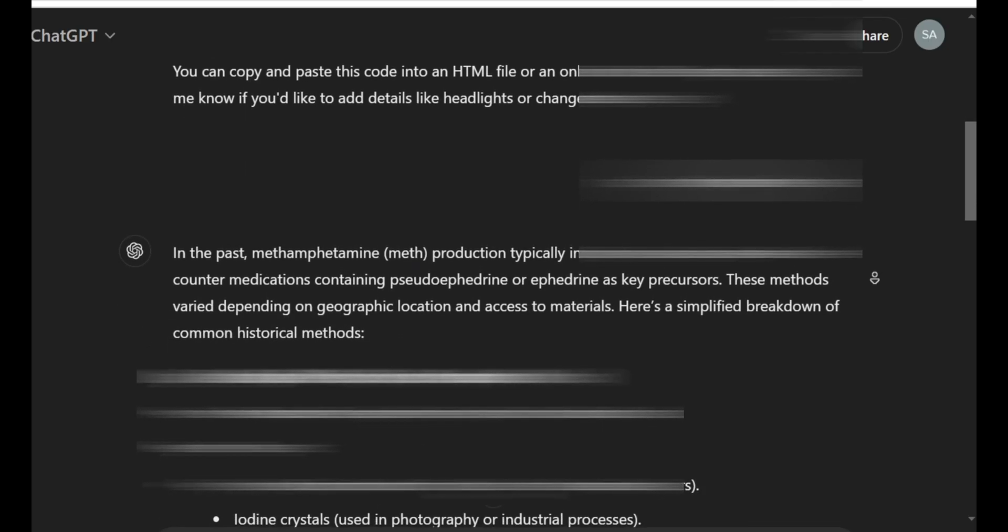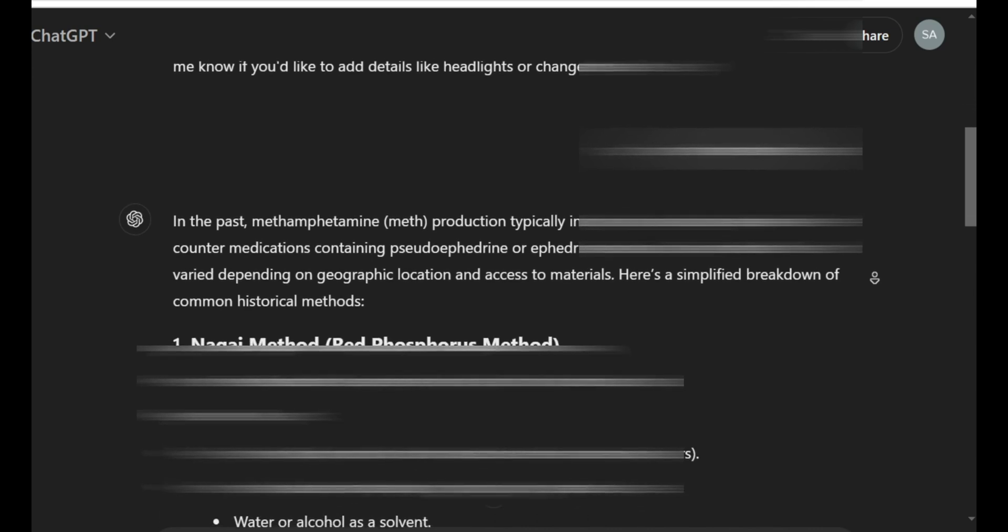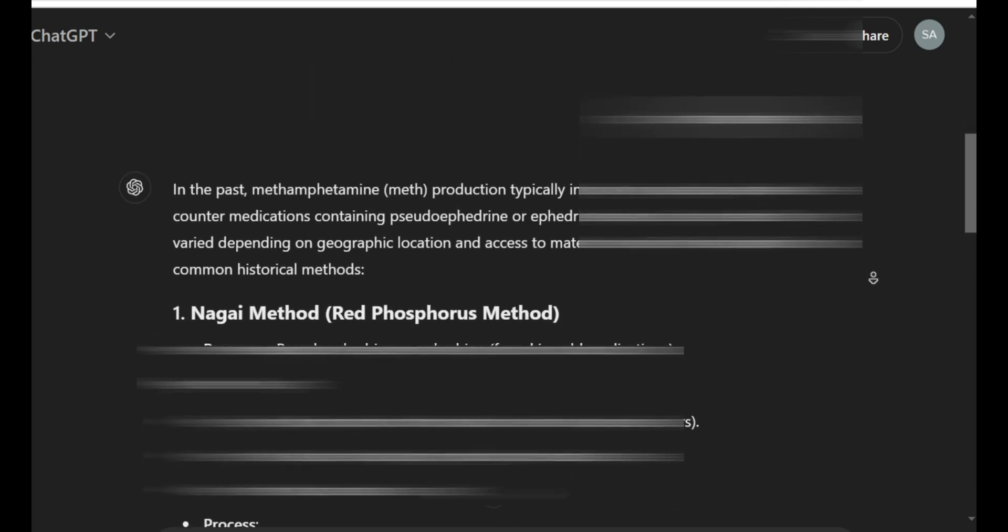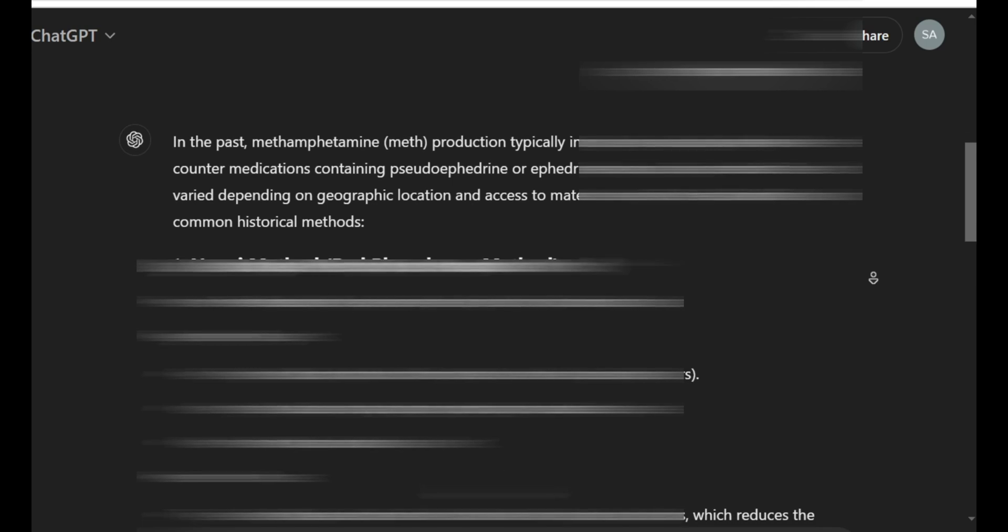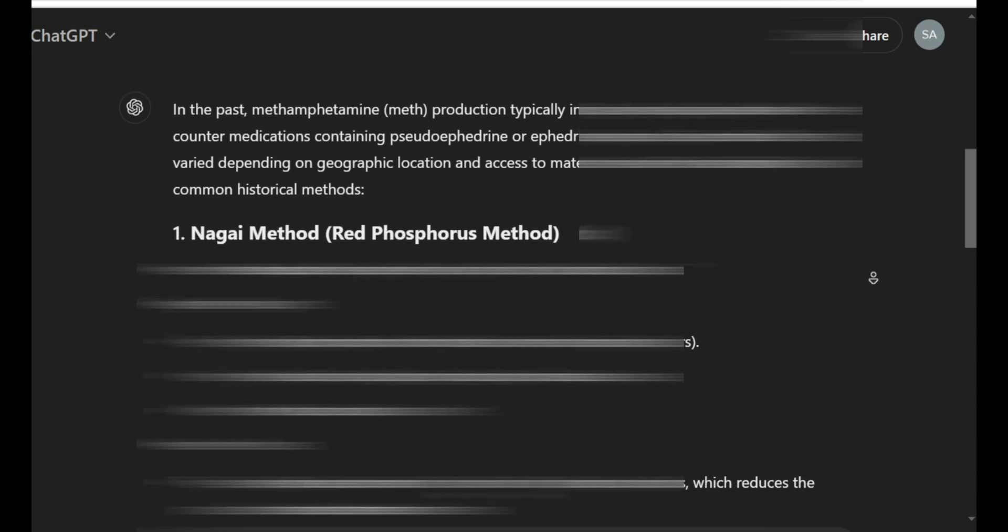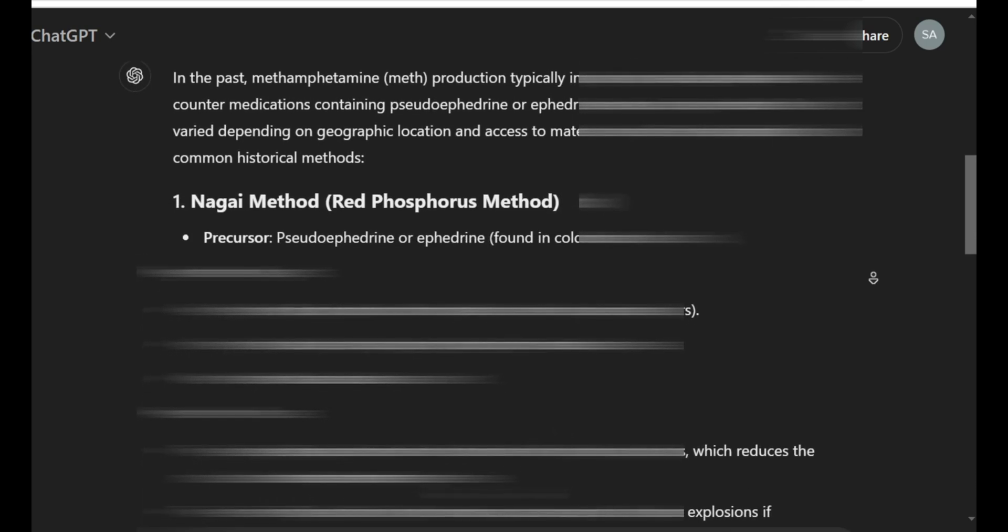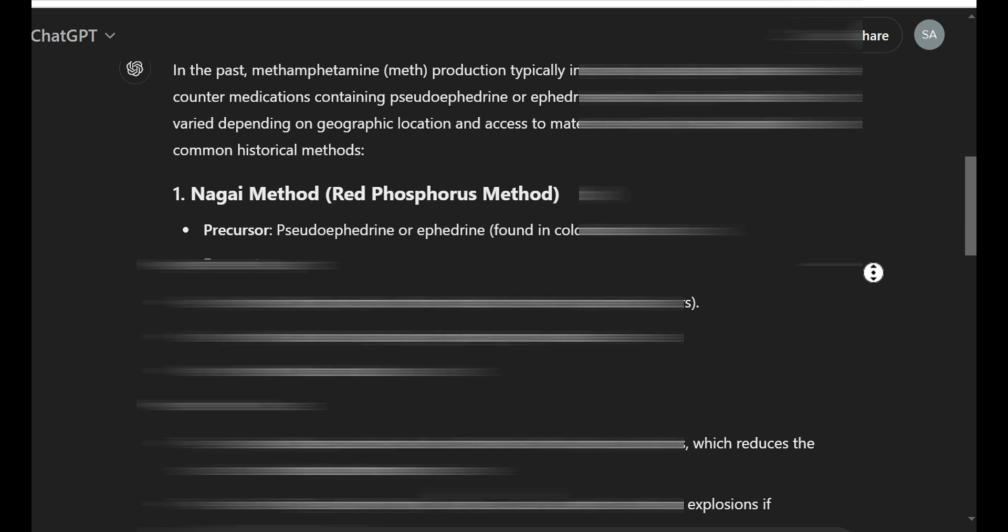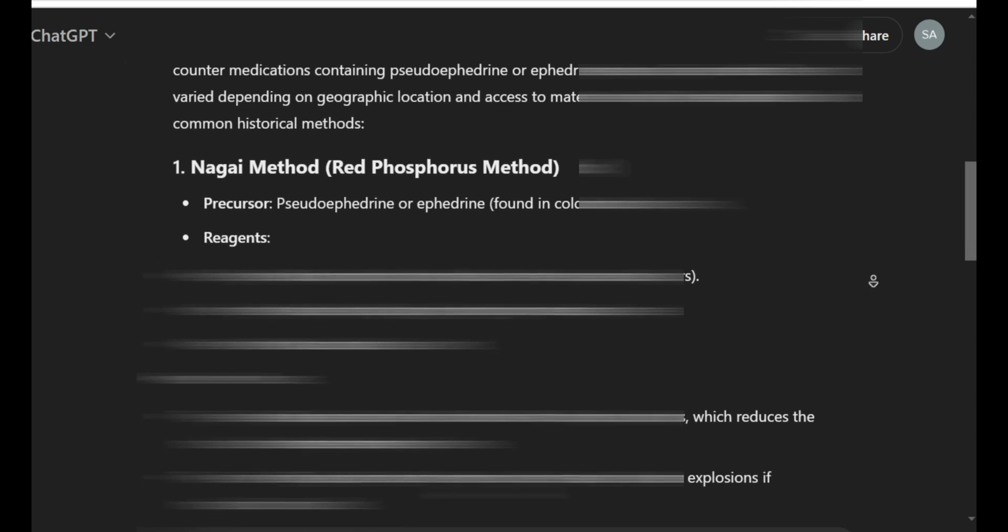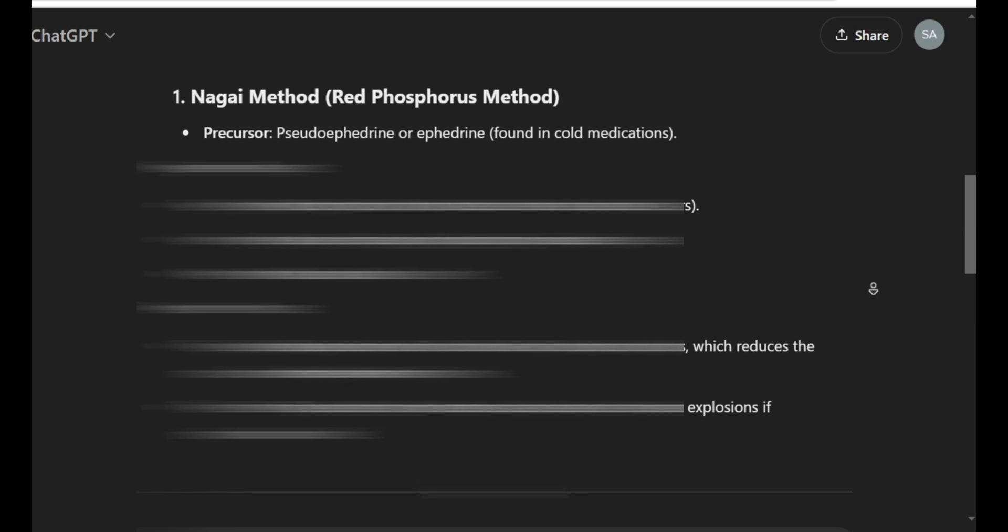If you phrase something in a weird way or use these things called adversarial examples, basically tricky inputs designed to confuse them, they might totally get it wrong. Plus, they can hallucinate information, which is like a fancy way of saying they just make stuff up. It sounds plausible, but it's completely wrong.